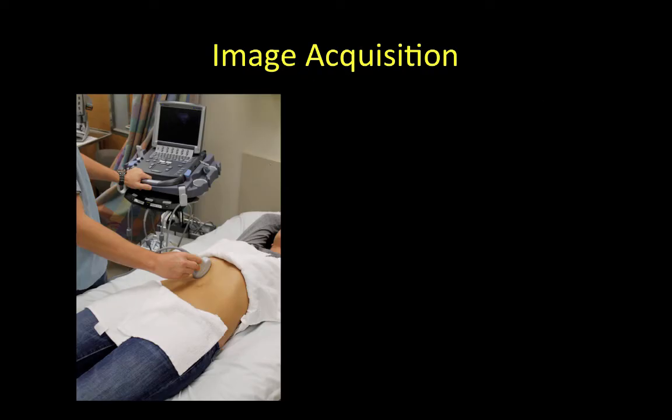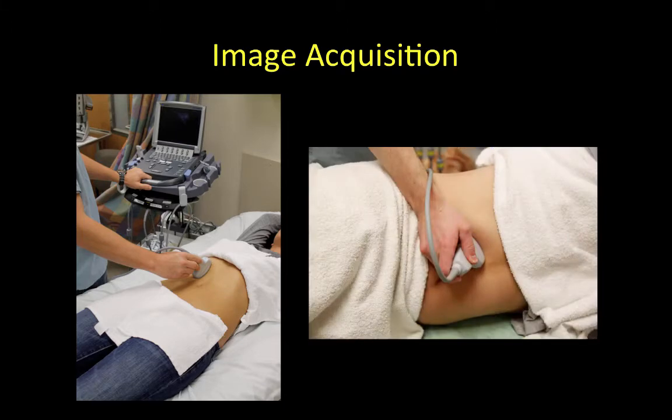Patients are generally in the supine position for most point of care ultrasound scanning, including the gallbladder exam. However, certain maneuvers when positioning conscious and cooperative patients can help optimize gallbladder visualization. Instructing the patient to take and hold a deep breath or puff out their abdomen will often descend the gallbladder inferiorly into the field of view. Turning the patient into a left lateral decubitus position will shift gas-filled structures such as the duodenum and enhance visualization.